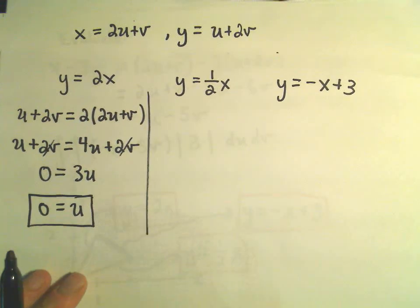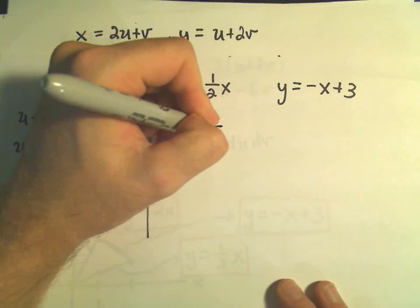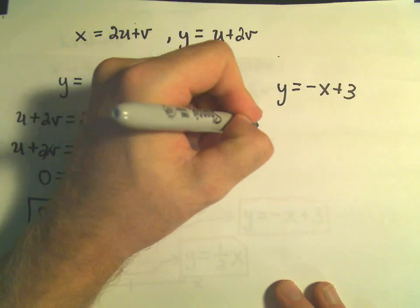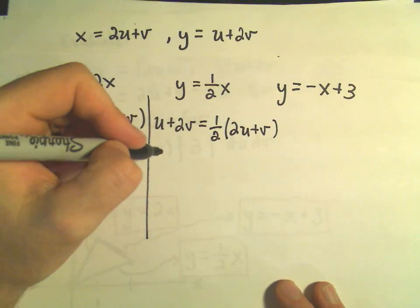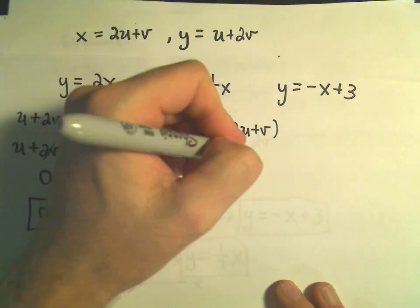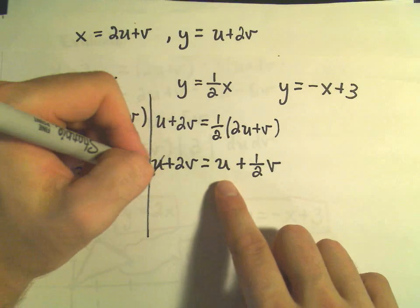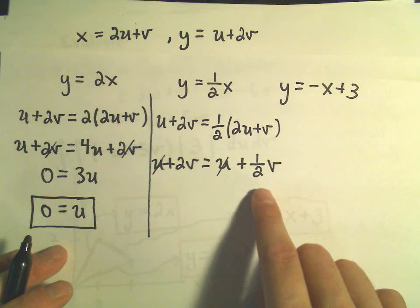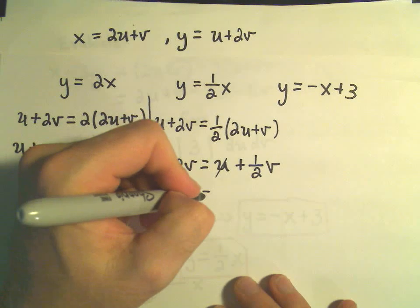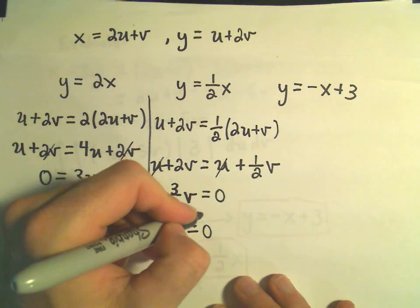For y equals one-half x: u + 2v = one-half times (2u + v). Distributing gives u + 2v = u + one-half v. The u terms cancel, and subtracting one-half v gives three-halves v equals 0, so v equals 0. The boundary line y equals one-half x transforms to the line v equals 0 in the UV plane.